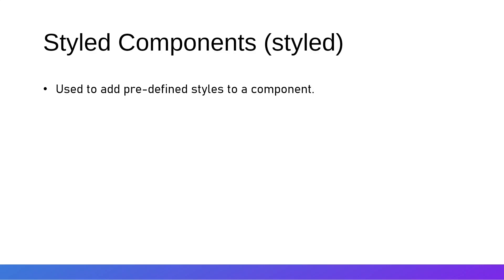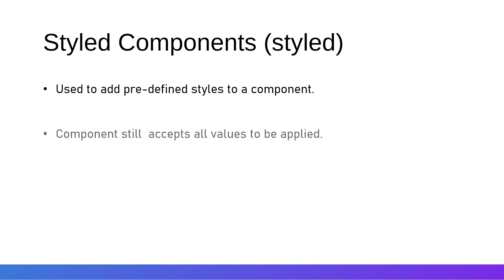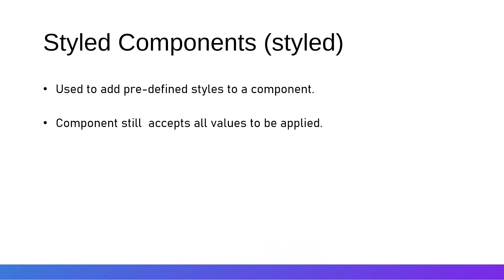Earlier, Material UI provided a package called `@mui/styles` which is now deprecated. They now recommend using styled-components instead of `makeStyles` or `createStyles`, which were available in the `@mui/styles` package. That package is no longer supported in React 18, so we use styled-components instead. The component wrapped with styled still accepts all of its default values.